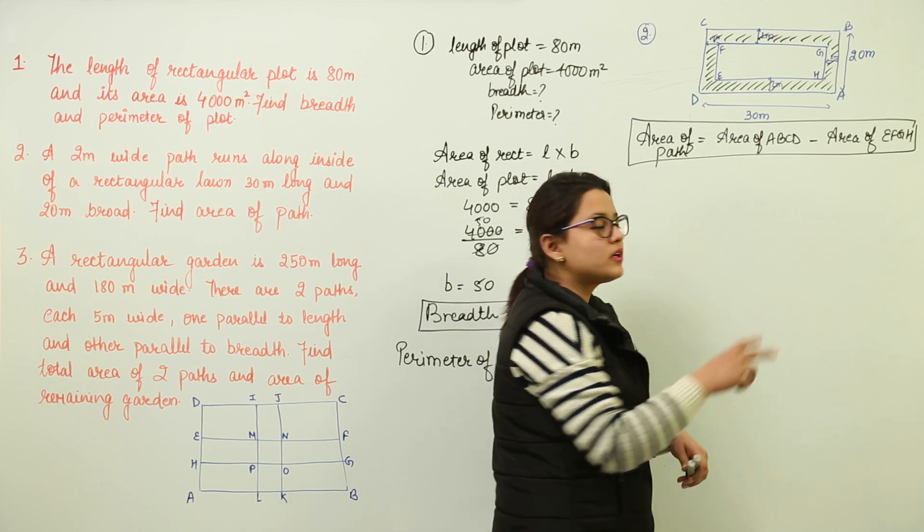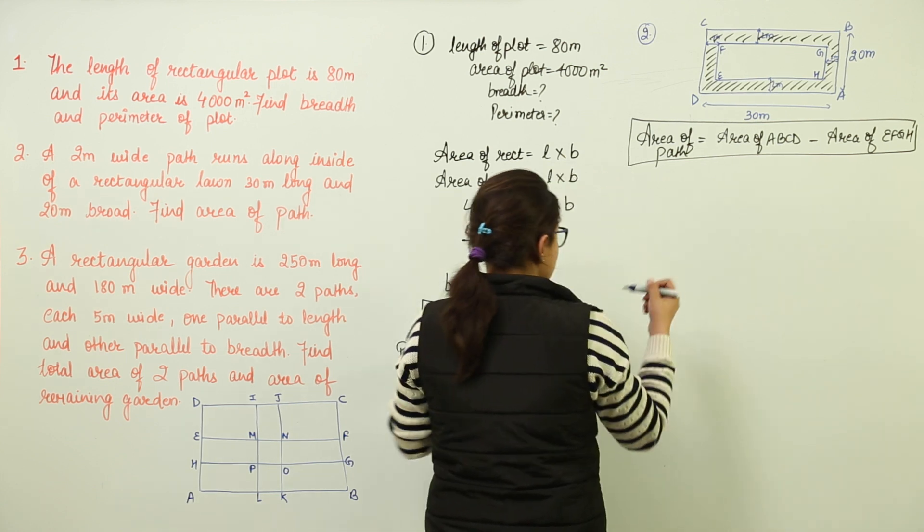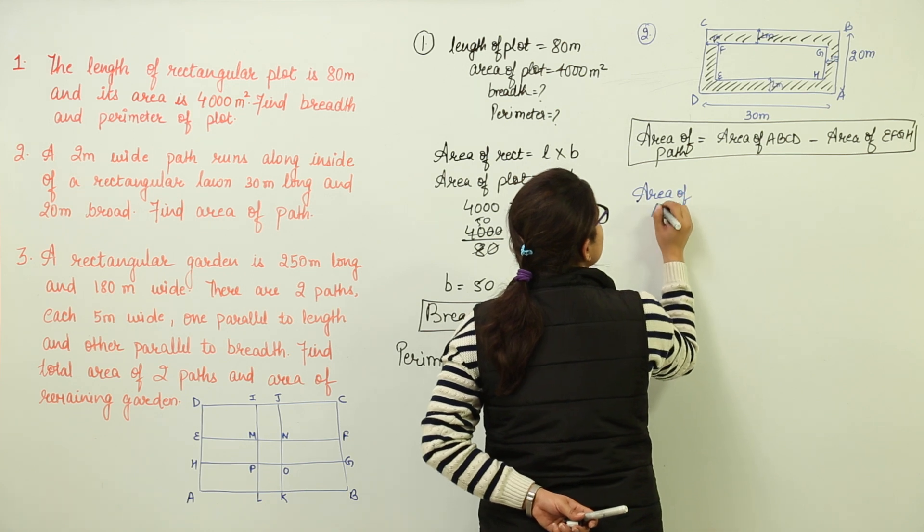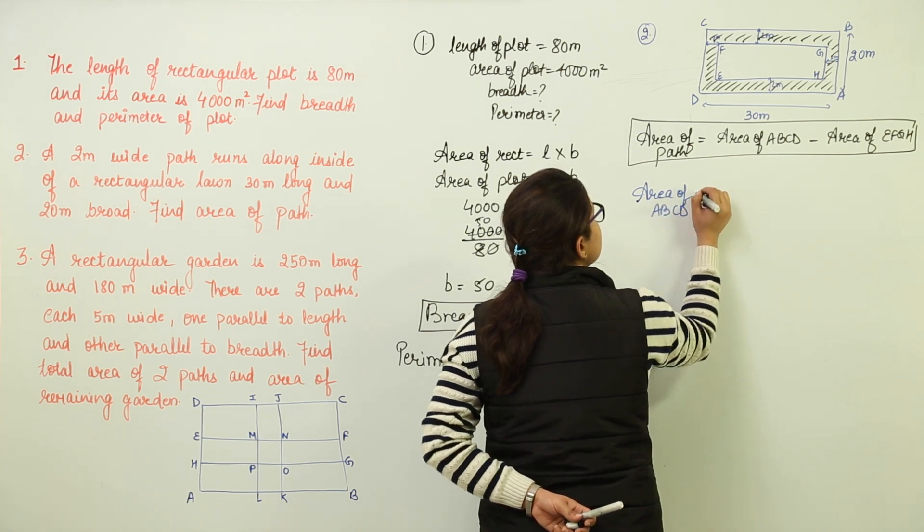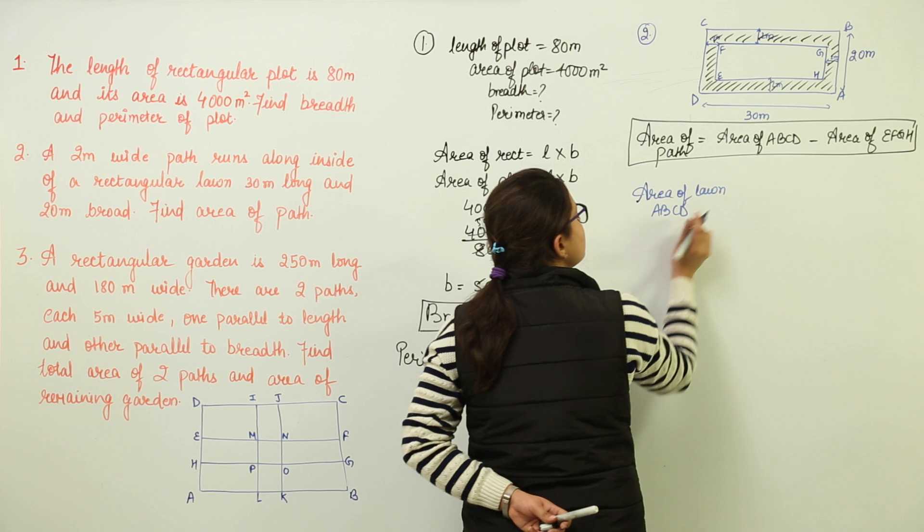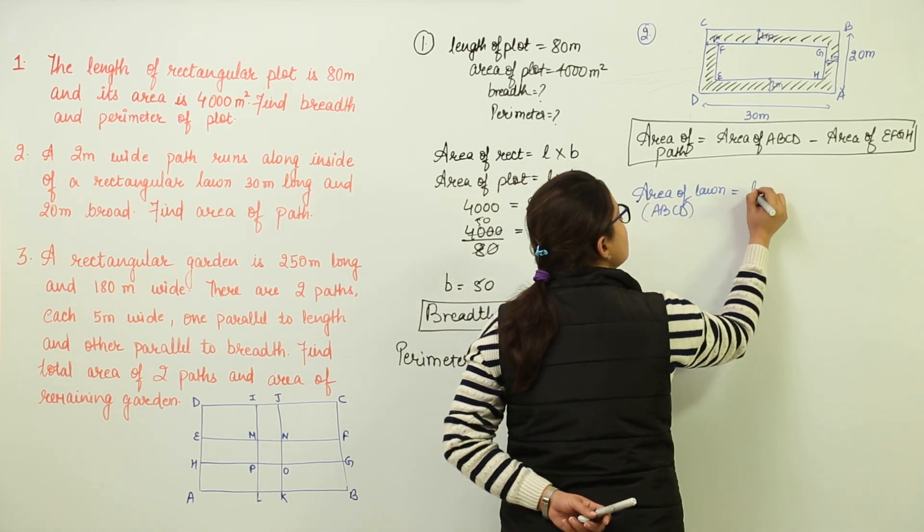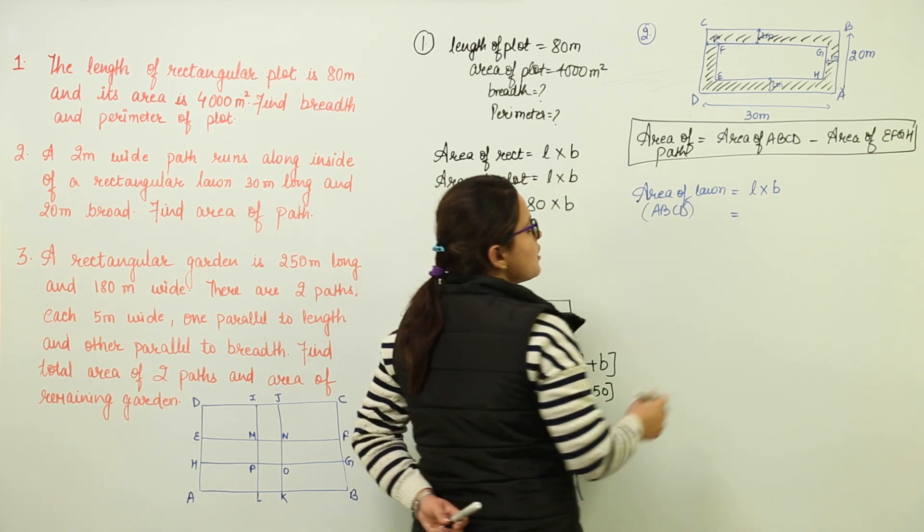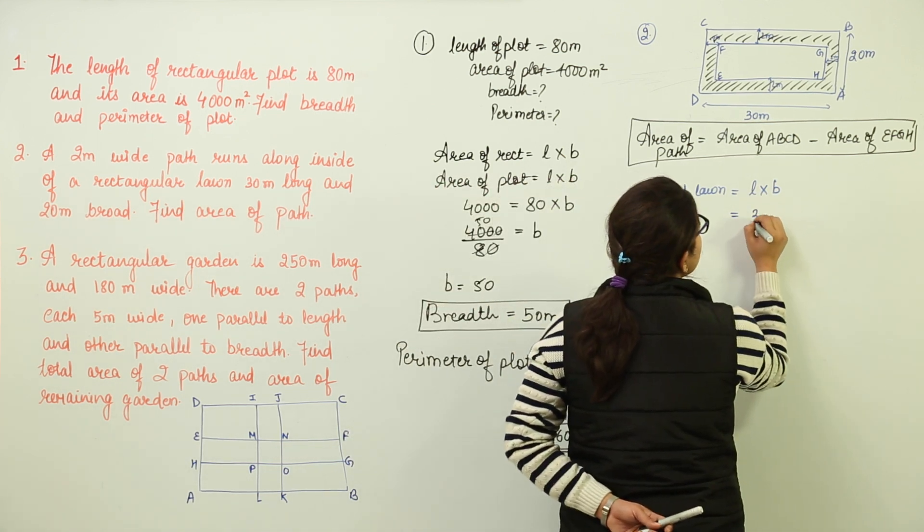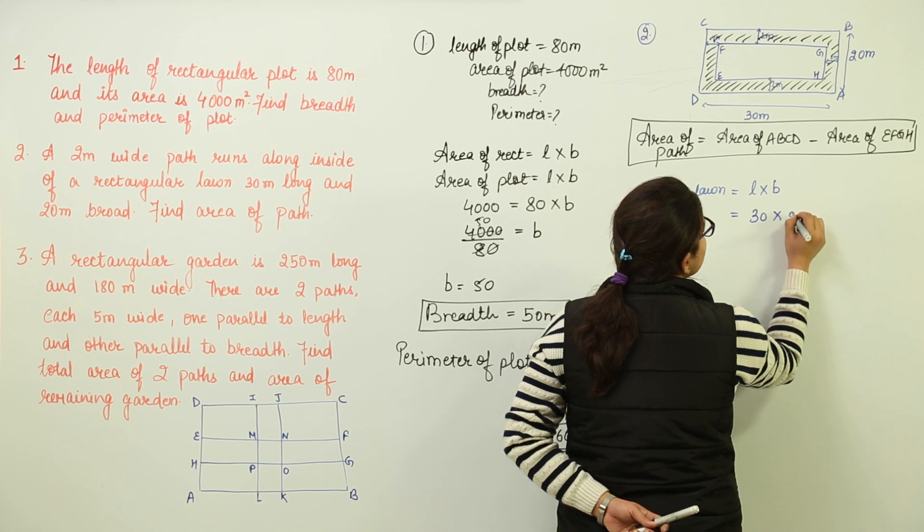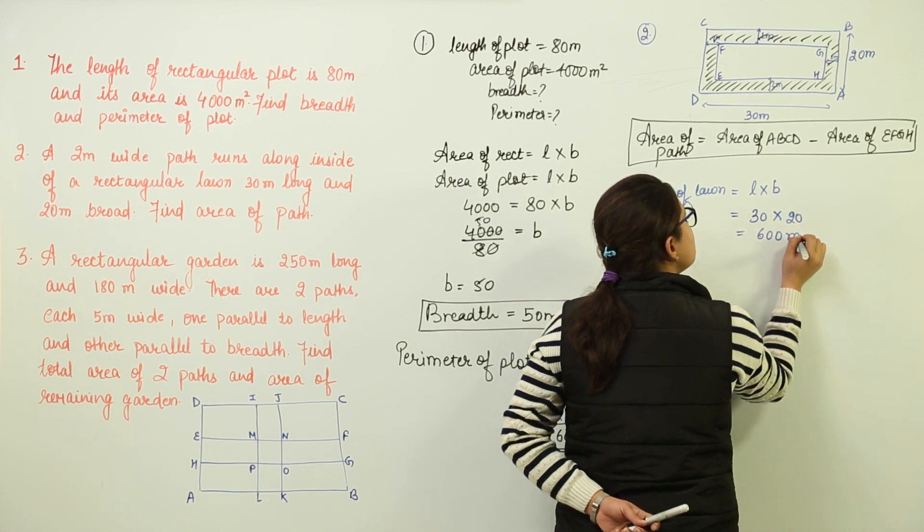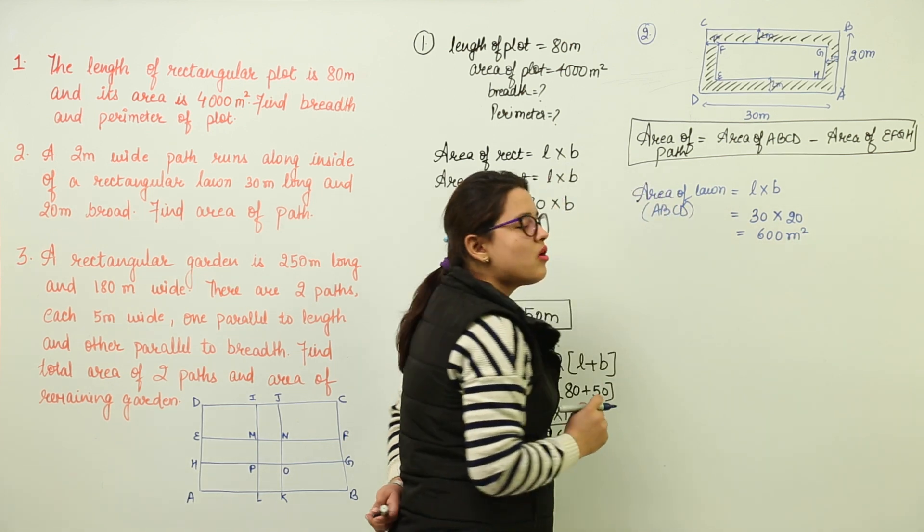So the next step should be for calculation of both the areas and we do it like this. Area of ABCD, because that is representing lawn, so I am going to write area of lawn in brackets ABCD equal to length into breadth as it was rectangular in shape. So what is the length of the lawn given to us? 30 and the breadth is given to us as 20. So we get 600 meters square as the area of lawn.